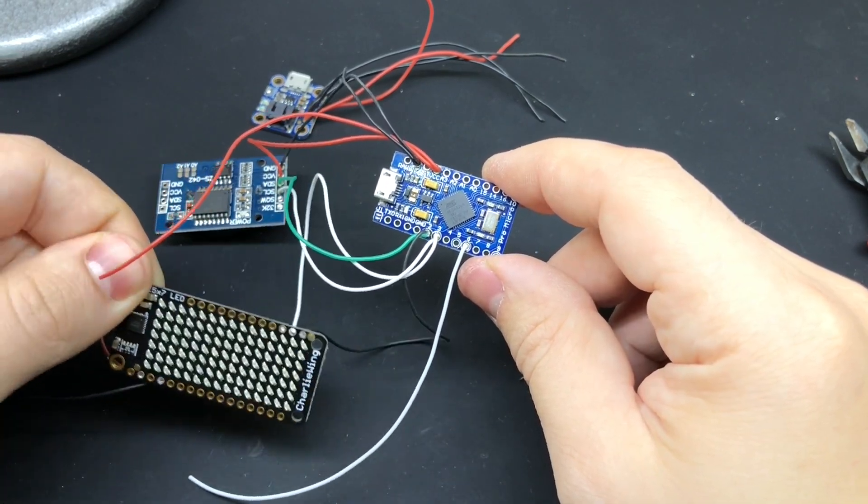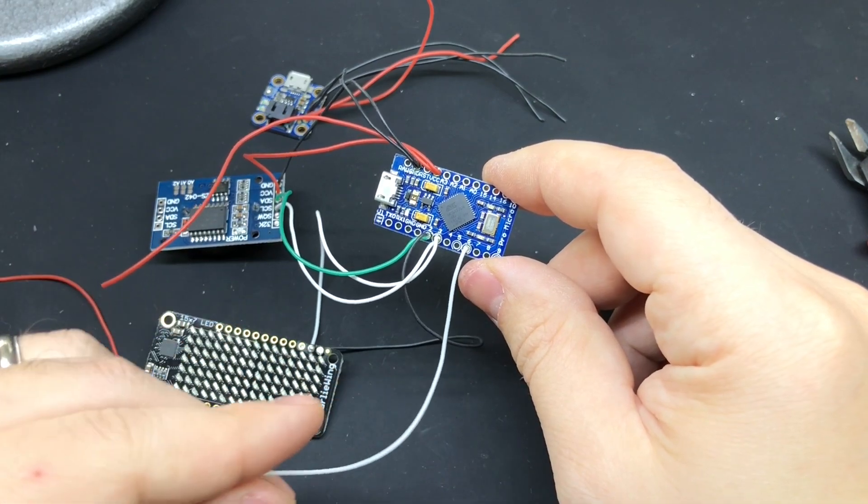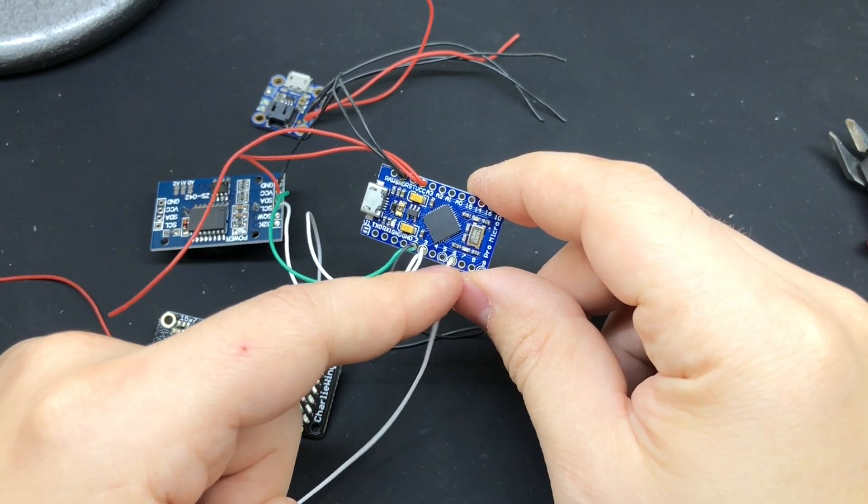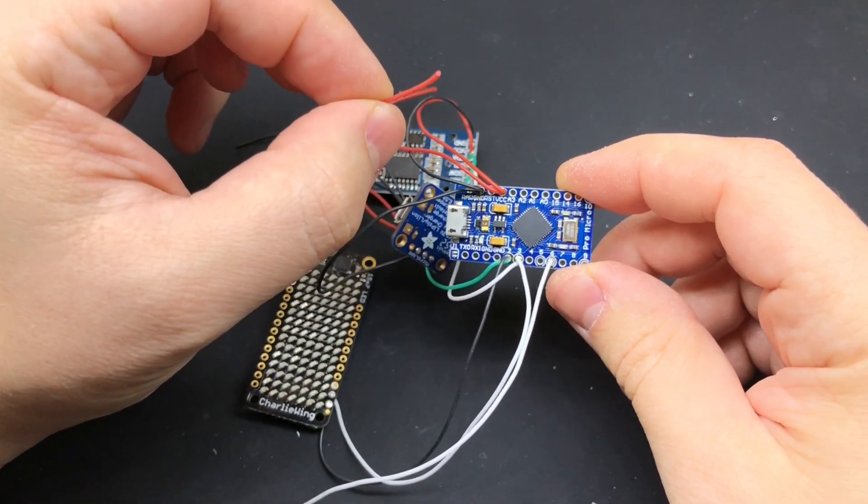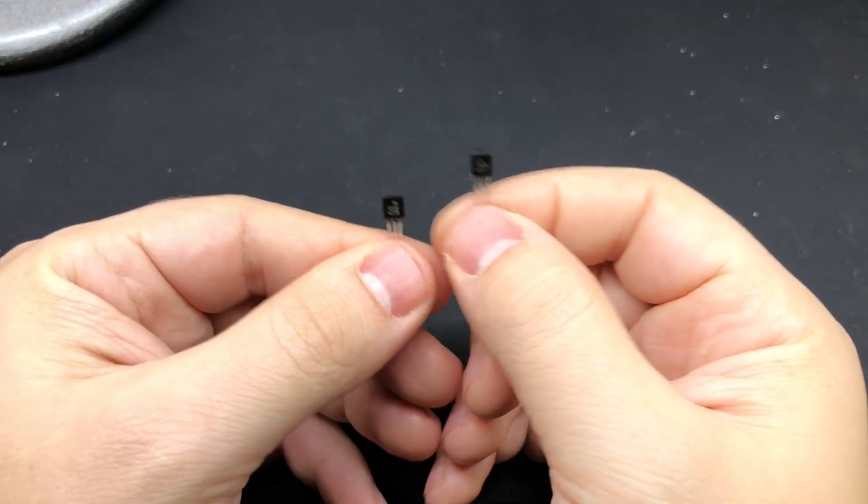I've got my SDA pin on pin 2 and SCL on 3 for the I2C bus. That'll be talking to our grid of LEDs and the RTC. And then I've got another wire attached to pin 6. You'll notice though that the Arduino itself isn't actually hooked up to power. That's where these transistors that I mentioned earlier come in.